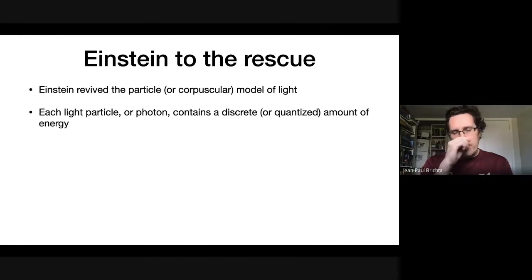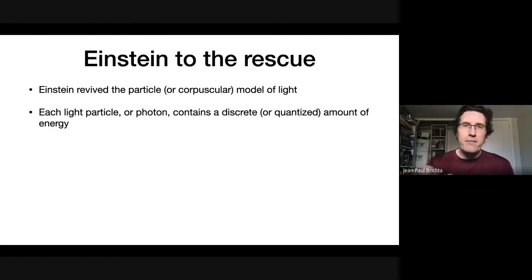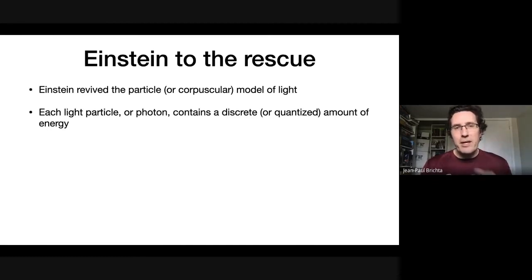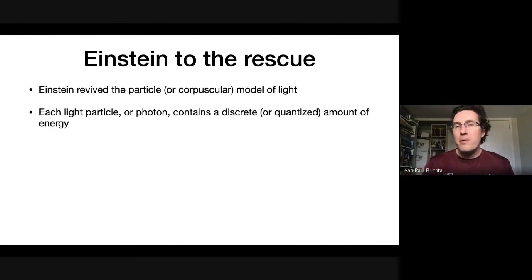The other thing Einstein described is that a photon has a discrete — or quantized, as it came to be called — amount of energy. Each photon of light has a certain set amount of energy. It's not like kinetic energy where you can throw a baseball with more or less energy depending on how fast you throw it. A light particle has a discrete amount of energy and it's always the same depending on what the light's frequency is. This was the key genius of Einstein — he realized that frequency was the most important characteristic.